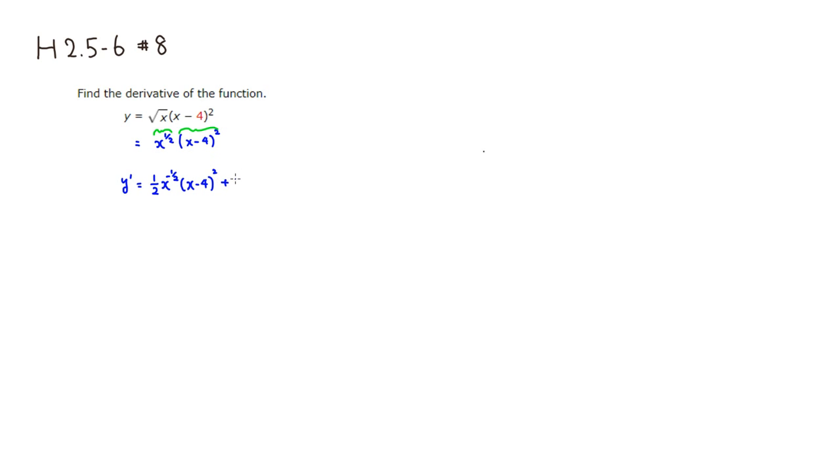The first guy is x to the 1 half power, multiply by the derivative of this guy. So you have 2 in front. Keep the same inside function, so x minus 4. Then subtract 1 from the power. It's the first power. Multiply by the derivative of inside, which is 1 anyway. So you just get that.